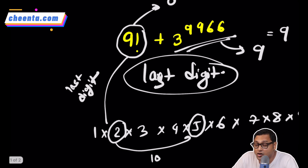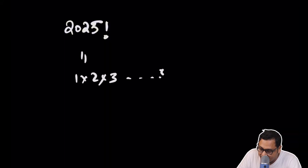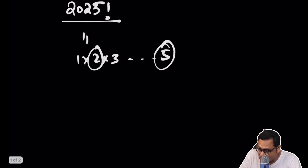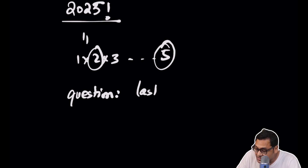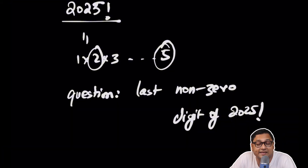Now this problem can become much more complicated. For example, what is the last digit of 2025 factorial? Well, it's 0, because it's a multiple of 10 — as you keep multiplying you'll get a 5 somewhere and a 2 somewhere, so it becomes a multiple of 10. Here's a challenge question: can you find the last non-zero digit of 2025 factorial?